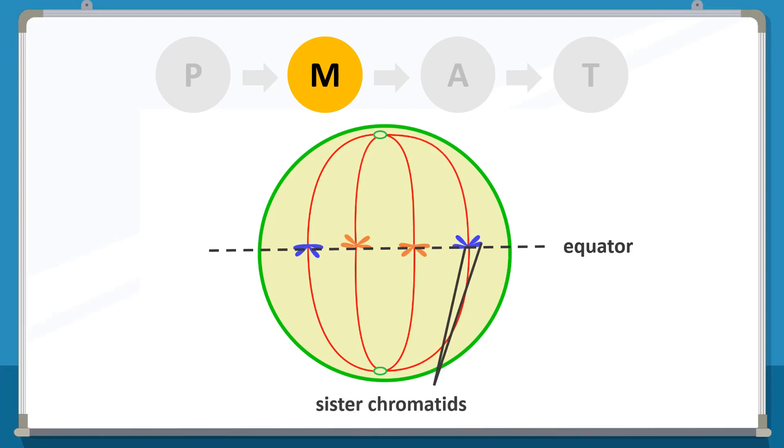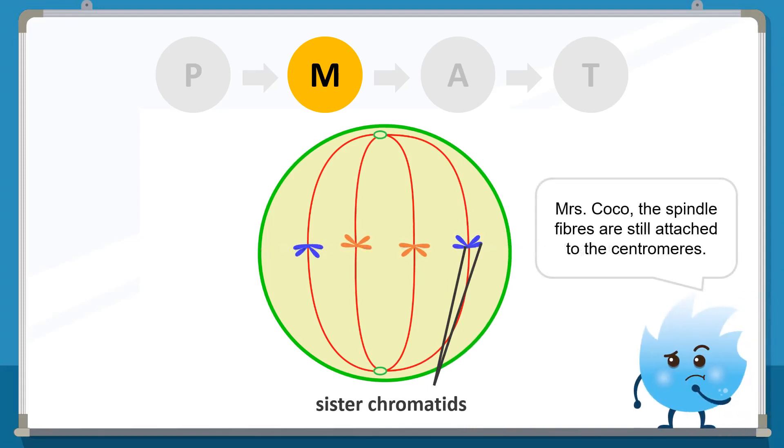Now the sister chromatids are ready to be separated. Mrs. Coco, the spindle fibers are still attached to the centromeres? Yes, Spiky. They have to be, because these spindle fibers will help separate the sister chromatids during the third phase, anaphase.